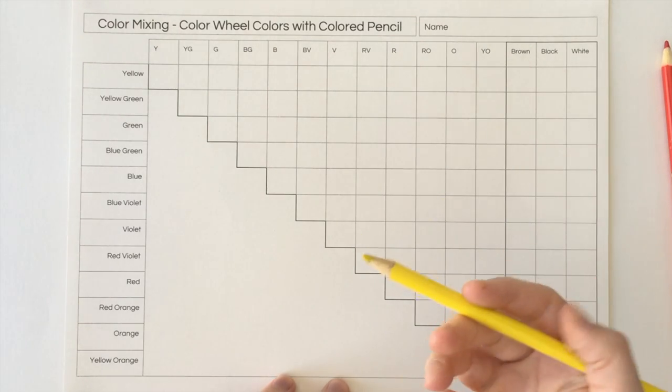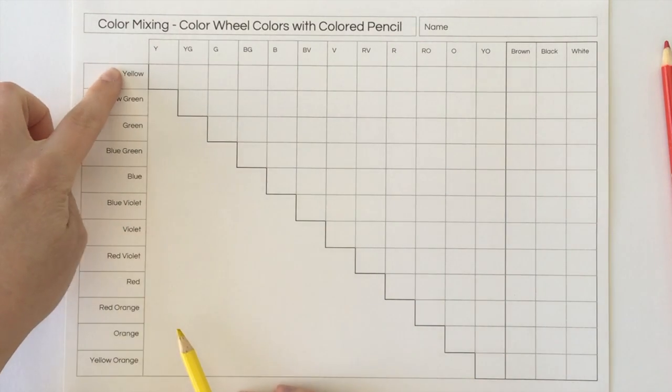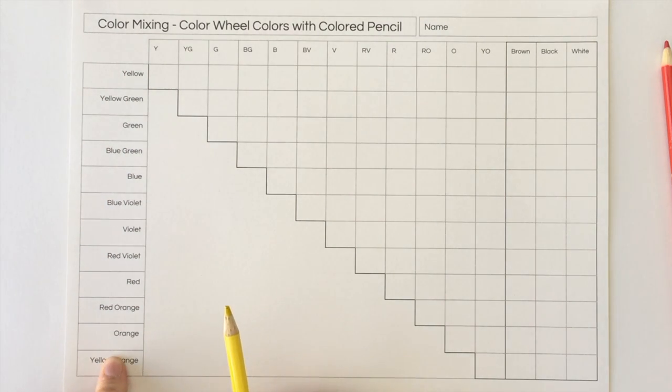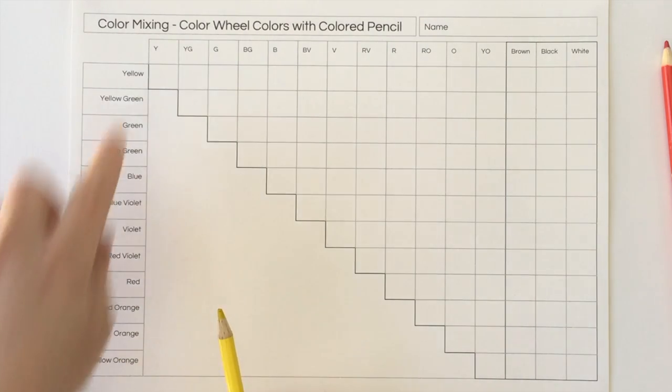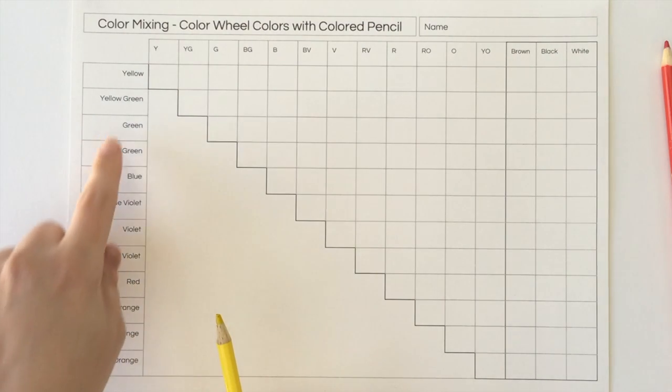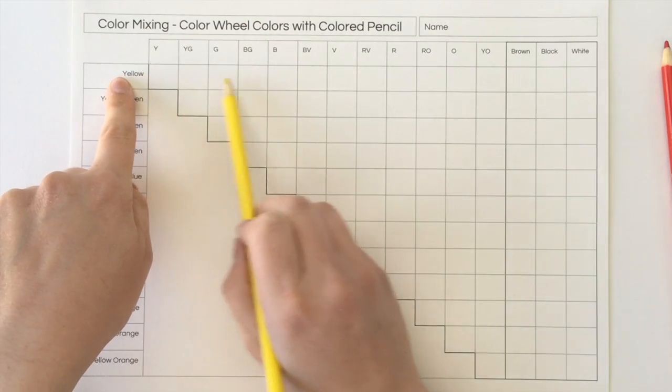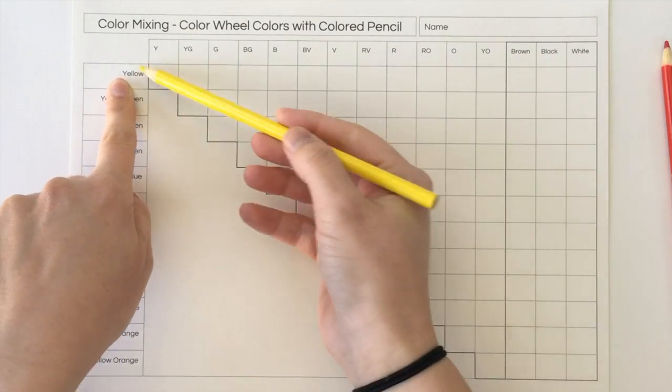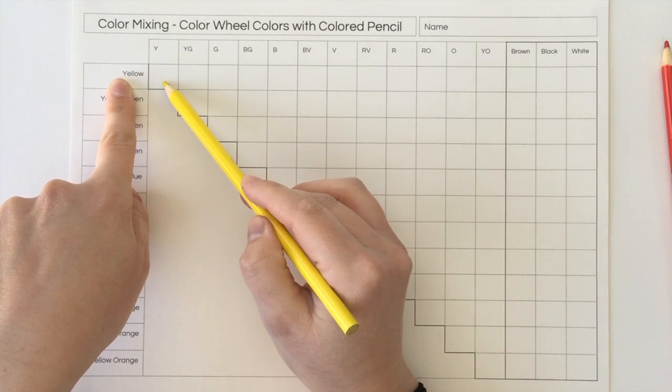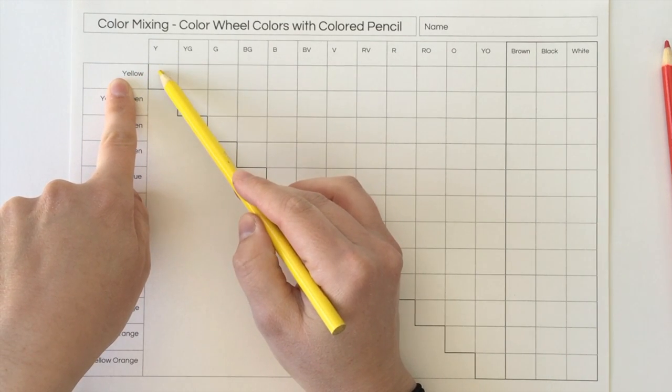I am going to start with yellow. You have all of the 12 color wheel colors on the left and the top, and so this whole row will have yellow. And then this box will be yellow. So this box is just yellow.